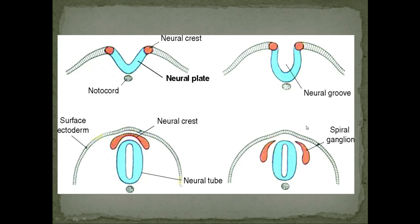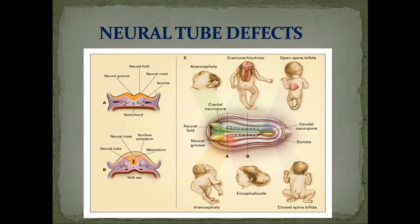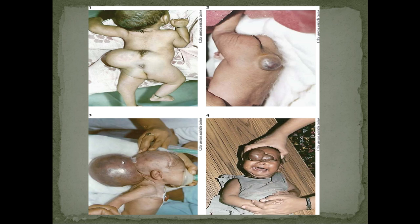In the diagram, we can see the notochord and ectoderm with mesoderm and endoderm. Folding occurs in the ectoderm forming the neural groove, which then closes to form the neural tube. The groove closes and neural crest cells form above. If there is any defect anywhere, it can result in neural tube defects such as spina bifida — which can be open or closed — anencephaly, and other conditions requiring operative procedures.